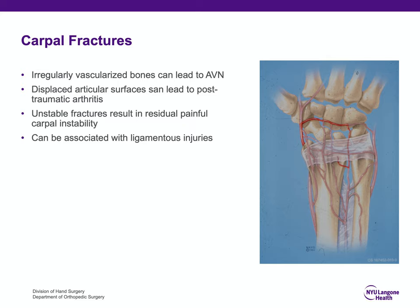When there are displaced articular fractures, that can oftentimes lead to post-traumatic arthritis, which can be painful with loss of range of motion and strength. Unstable fractures lead to instability of adjacent joints, and that can happen in the wrist also.